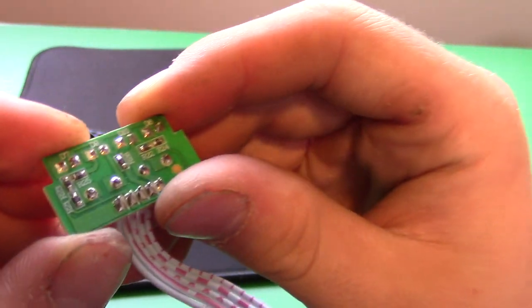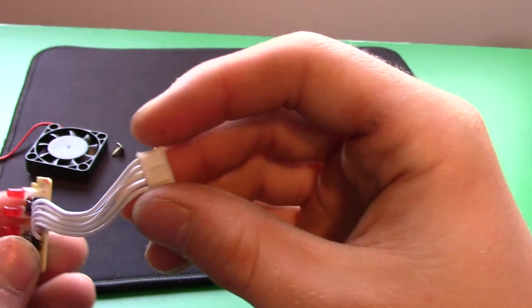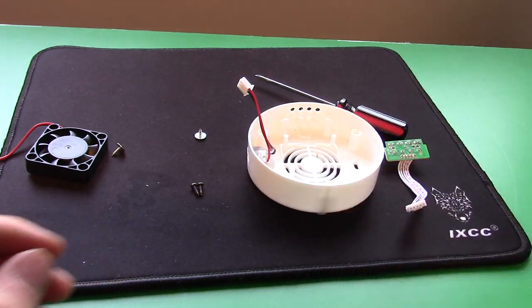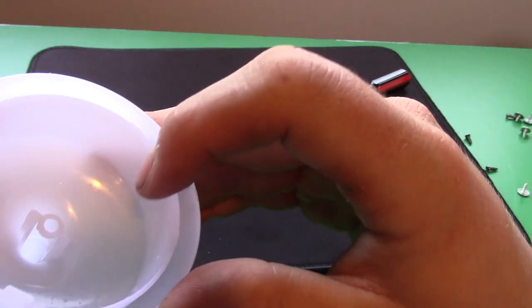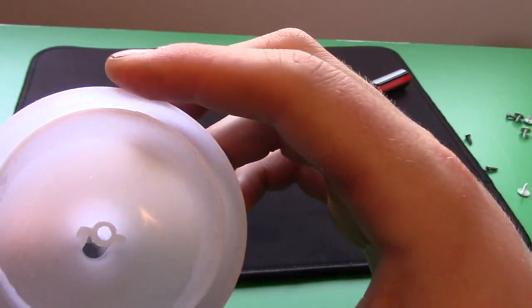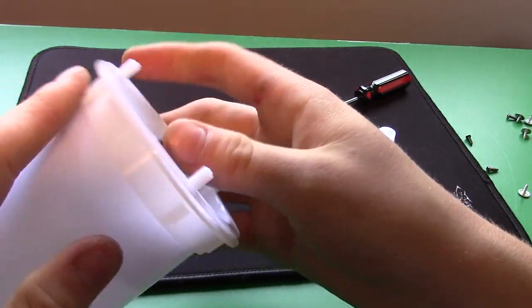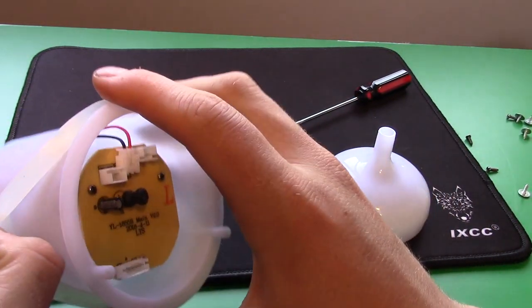There's some little surface mount resistors on the back here for the LEDs, and it just plugs into the main circuit board. Here's the little funnel part. You can see that it channels the mist air up the little spout here. There's a rubber gasket on here which helps hold on the ceramic top.